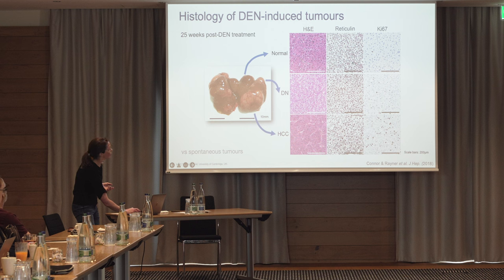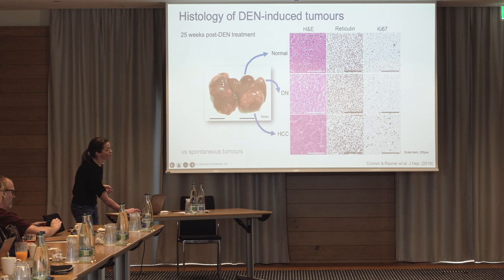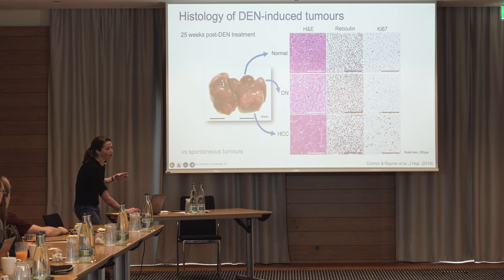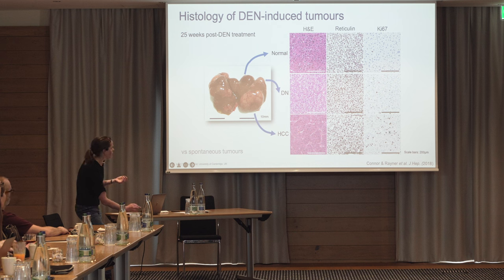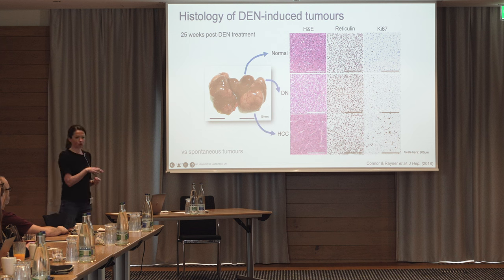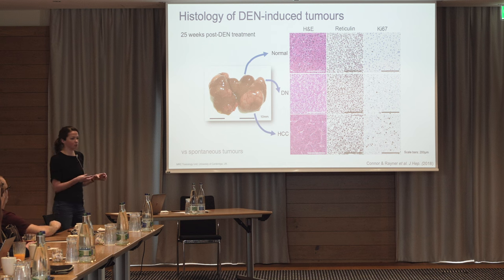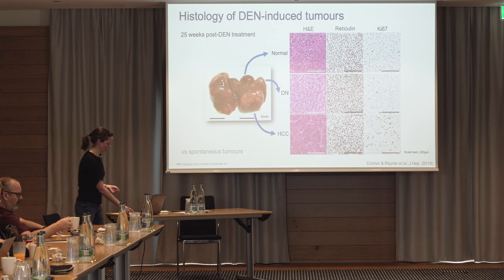Looking at the histology: this is normal liver with a really ordered architecture you can see on the reticulin staining, and Ki67, which is a proliferative marker, doesn't come up very much. The dysplastic nodules — the early lesions — are a bit more disrupted architecturally and a bit more proliferative. And then in these HCCs — hepatocellular carcinomas — they're much more aggressive looking microscopically; the architecture is completely distorted and they're much more proliferative. From previous work we know these tumours are independent, not one HCC with multiple intrahepatic metastases, which means we can take them each as a separate sample and use fewer mice.